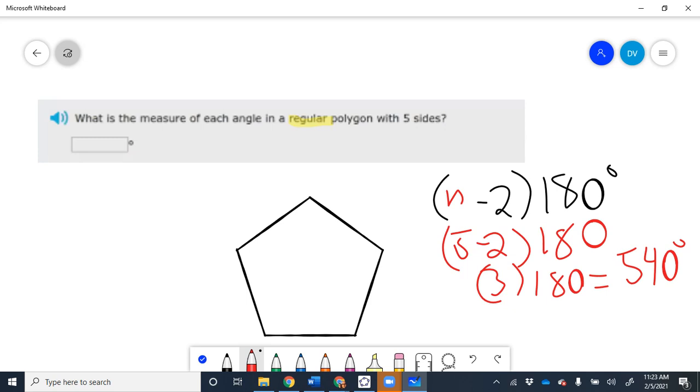You kind of said the answer before, but I asked you a different question. If there are five sides, and you're right, there are, how many angles are there also? Good.